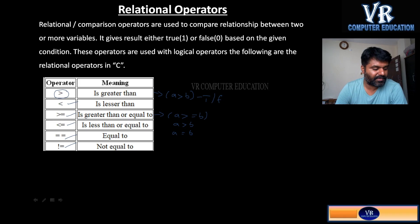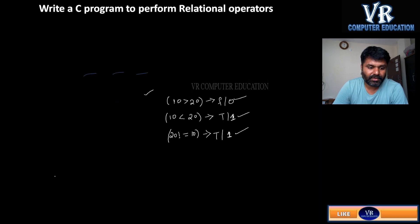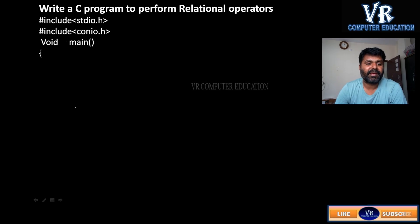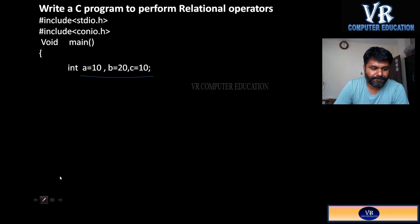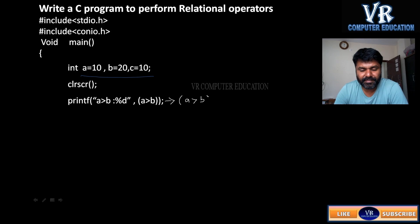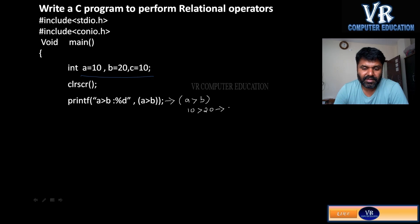Let us see an example program. Here, first comes header files declaration, then main function, then variable declarations, then clear screen. The first expression is A greater than B. Substituting the values: what is A value? 10 greater than 20. Is 10 greater than 20? It is false, or you will get the result as 0.